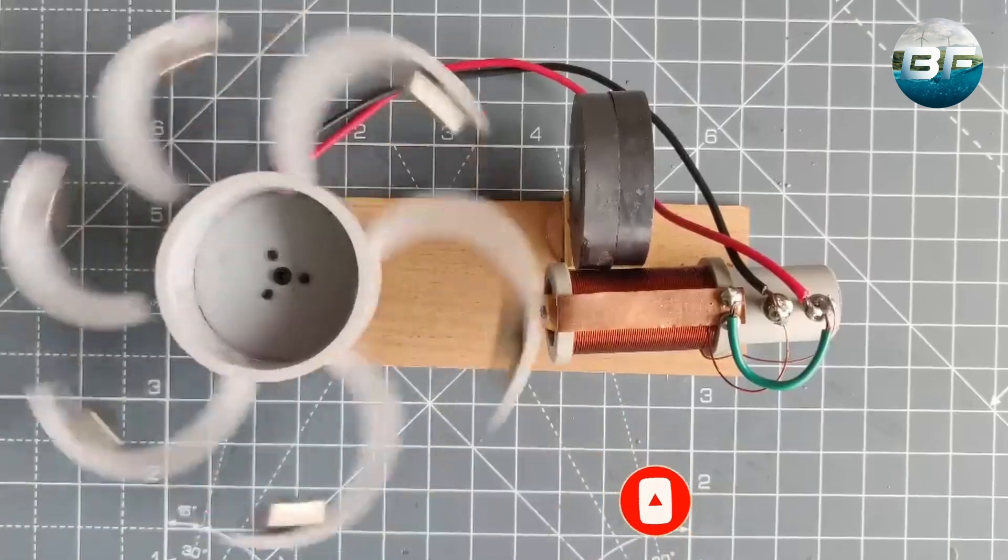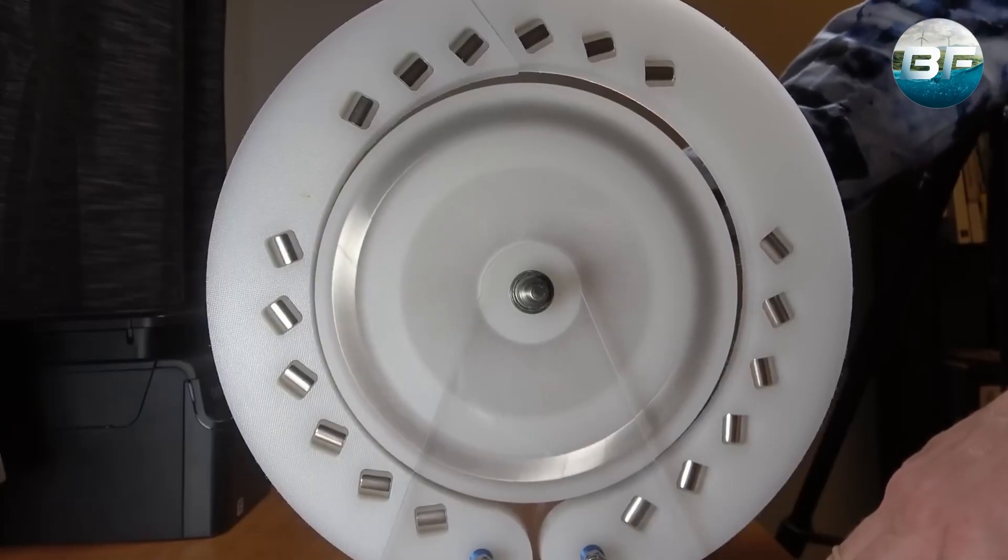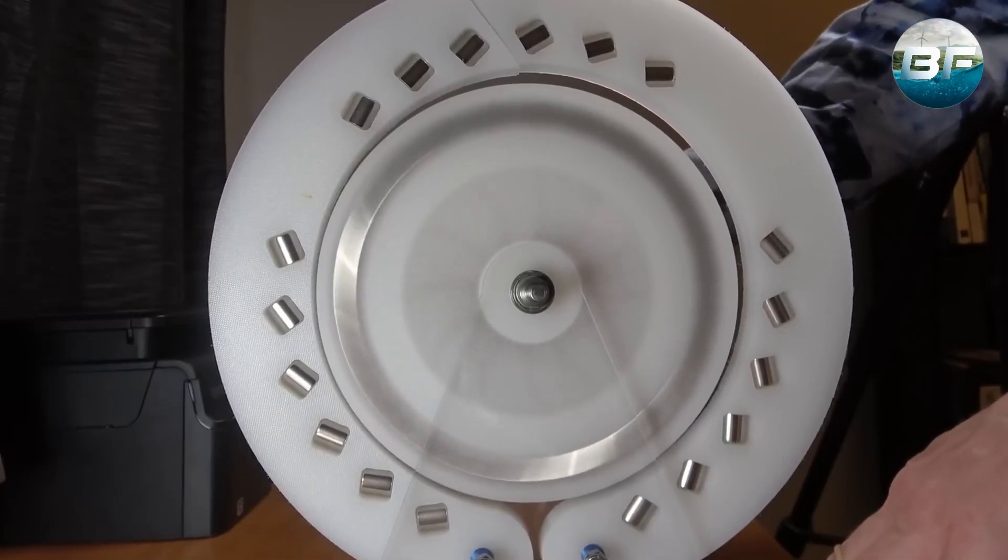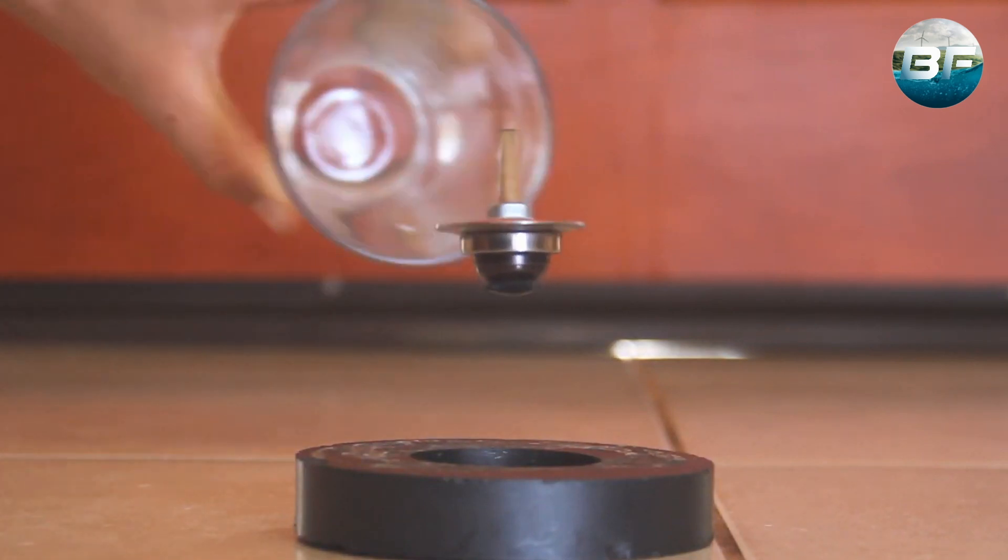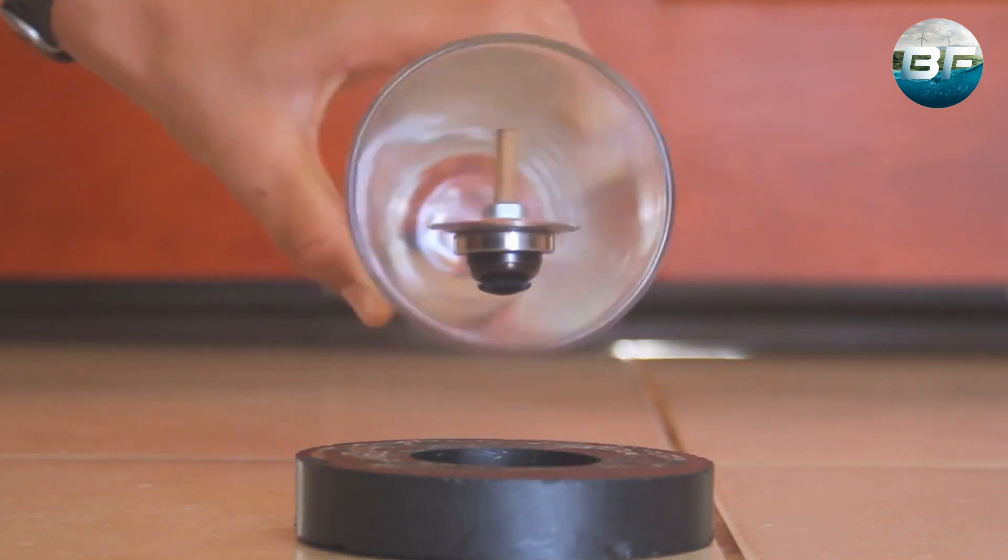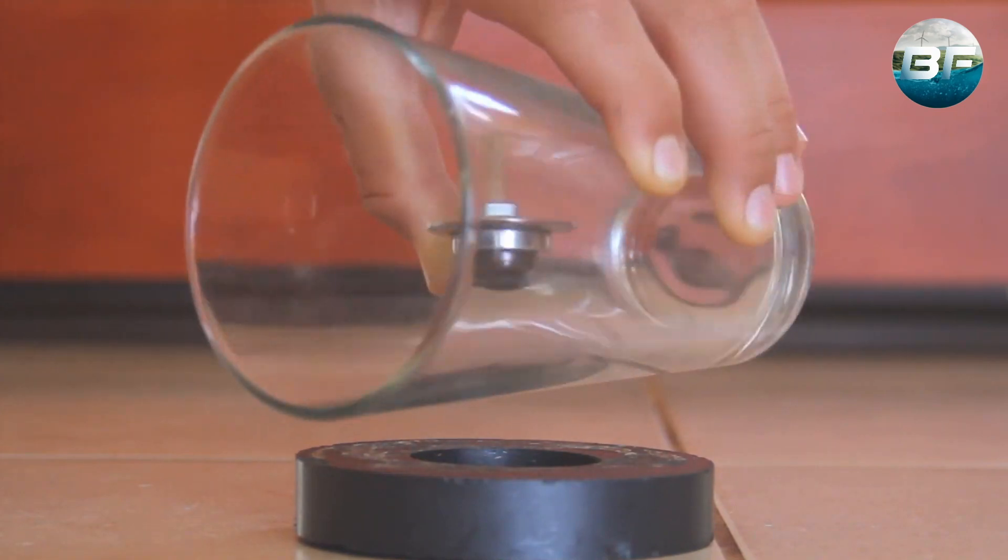However, if we give the magnet motor a push, it will theoretically rotate endlessly without frictional losses. The two energy balances cancel each other out, and all that remains is the initial push, which lets the system rotate indefinitely, allowing us to generate electricity.